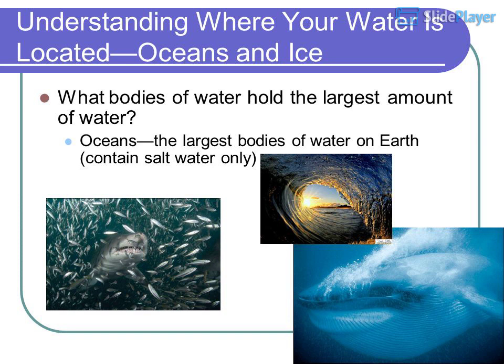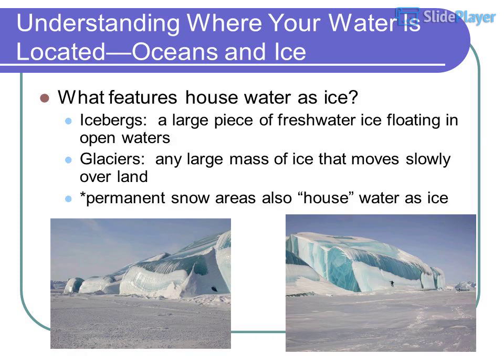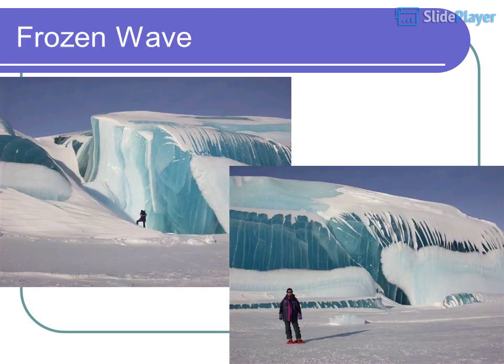Oceans are the largest bodies of water on Earth and contain salt water only. Water is also housed as ice in icebergs — large pieces of fresh water ice floating in open waters — and glaciers, any large mass of ice that moves slowly over land, as well as permanent snow areas.